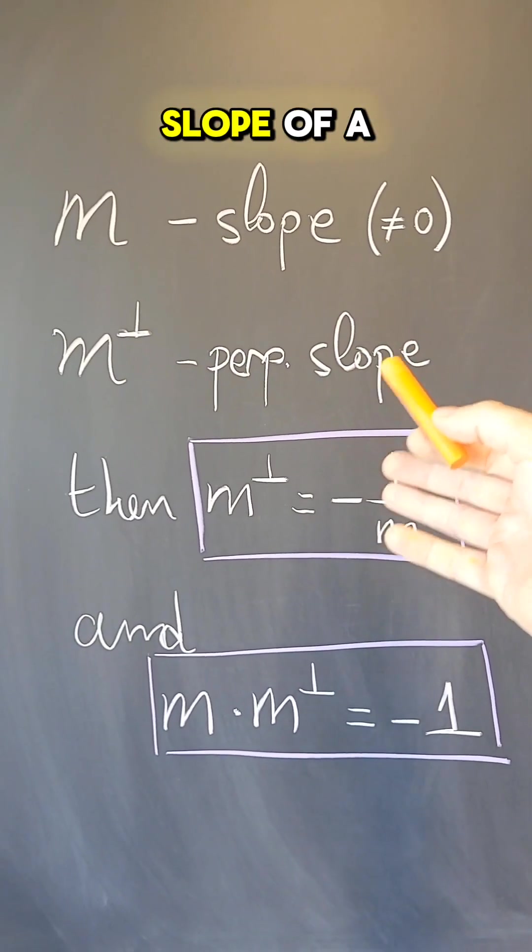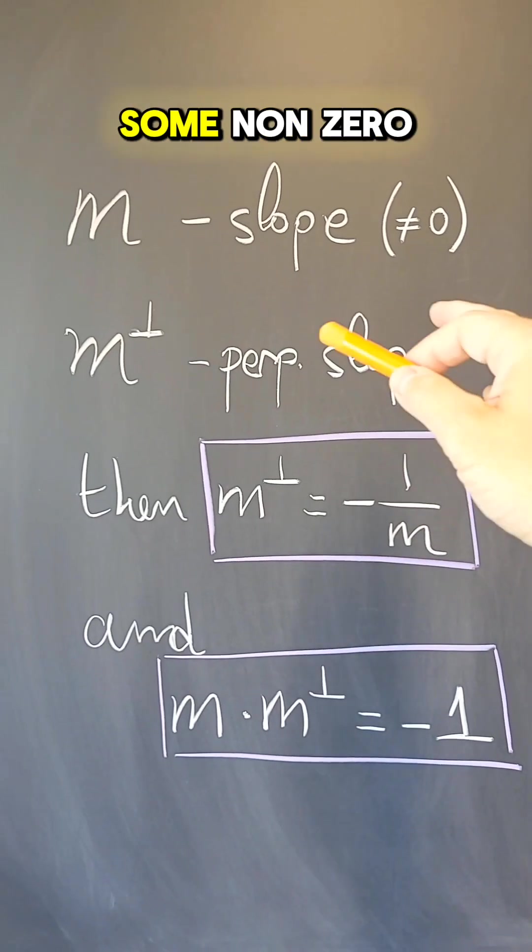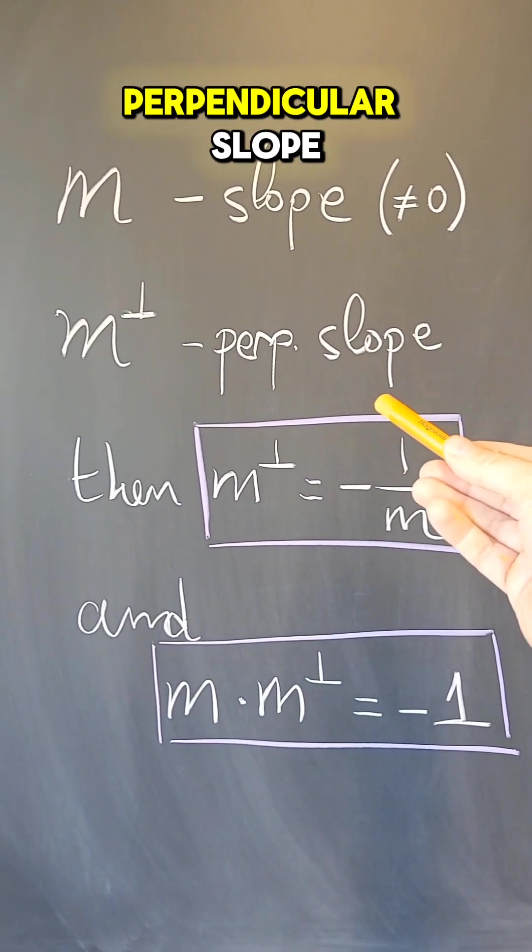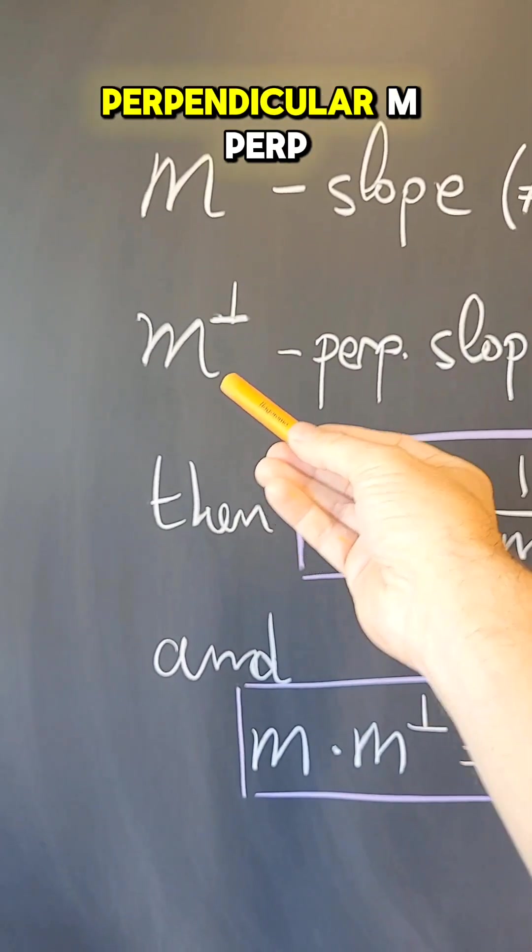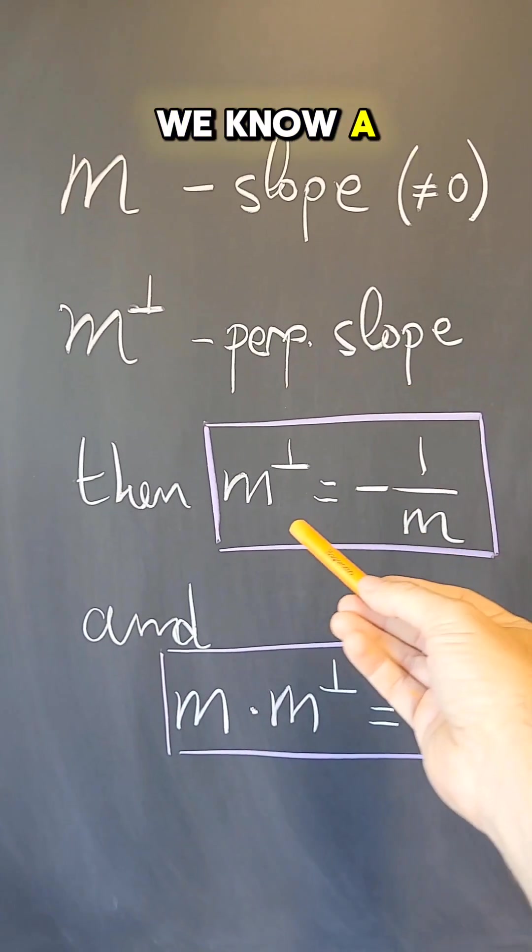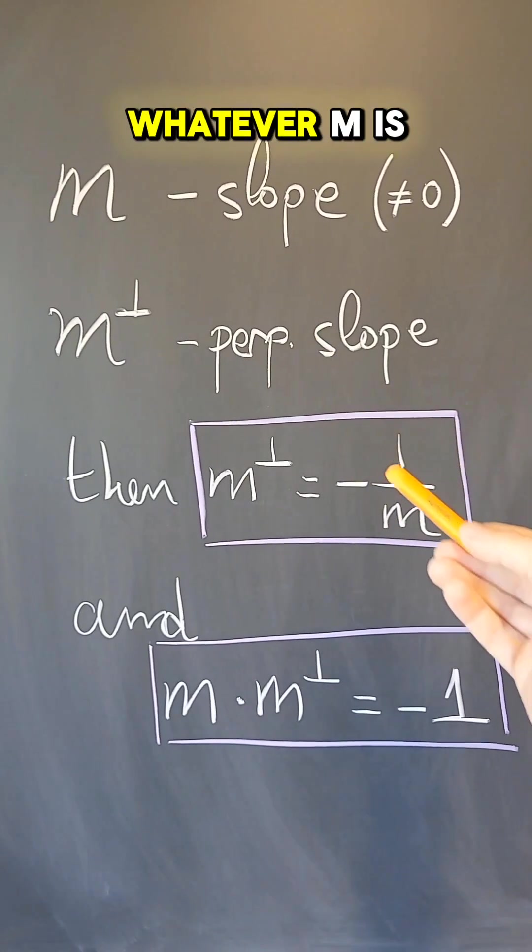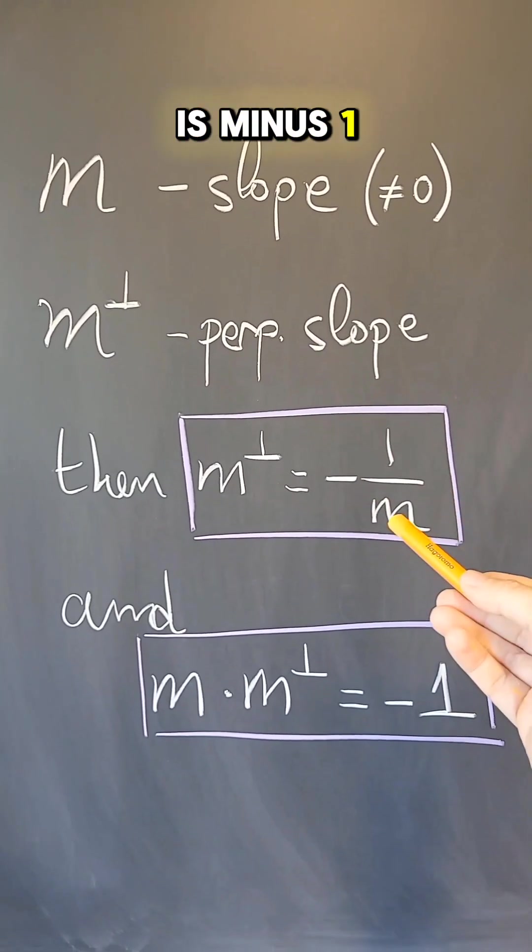So take m to be the slope of a line or a line segment, some non-zero slope. Then we can define some perpendicular slope. I'm going to call it m perp. And we know a formula for that perpendicular slope is minus one over m. Whatever m is, the perpendicular one is minus one over m.